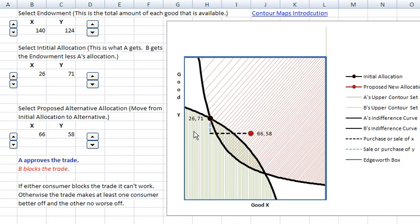This is the indifference curve through the endowment for B. And these green shaded points are the ones that are better for B. In this cross-hatched area in here, this little lens area, you have points that are better for both A and B.